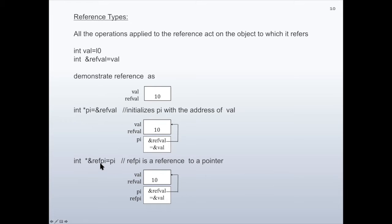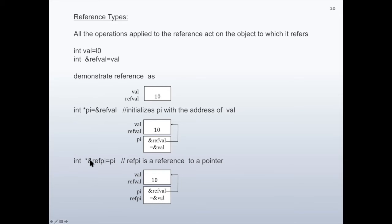Pi is a pointer to an integer. Here we declared pi as a pointer. ref_pi is a reference to a pointer to an integer, initialized as pi, so pi and ref_pi represent the same pointer. It holds the value address of ref_y, which is the same as the address of 'w', so ref_pi is also pointing to 'w'.